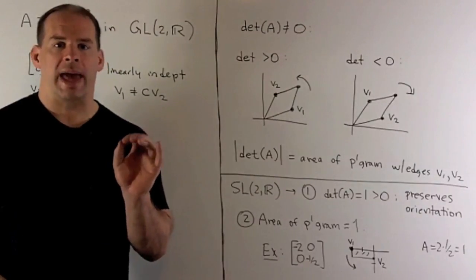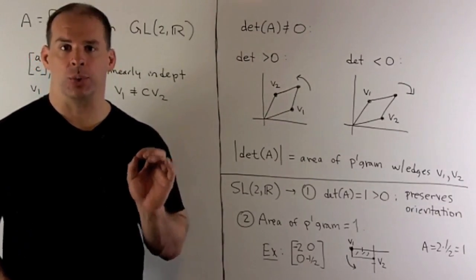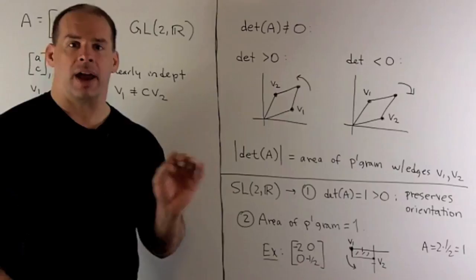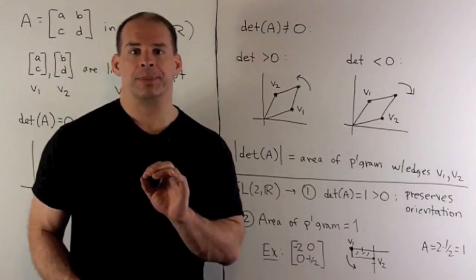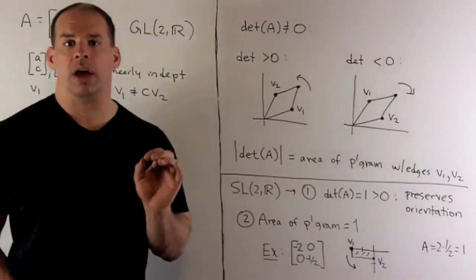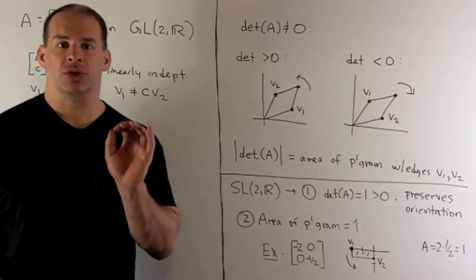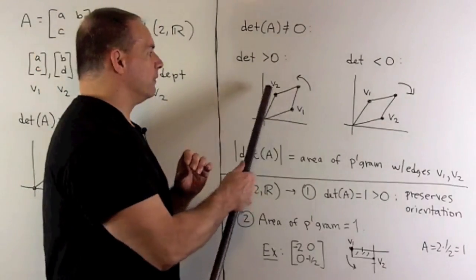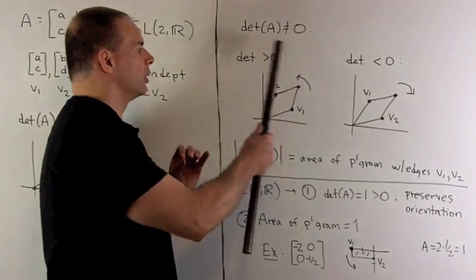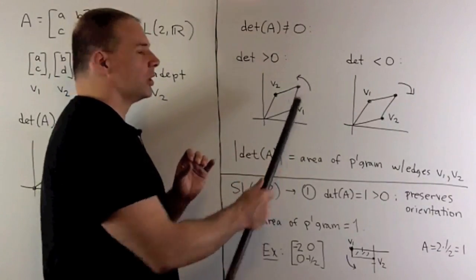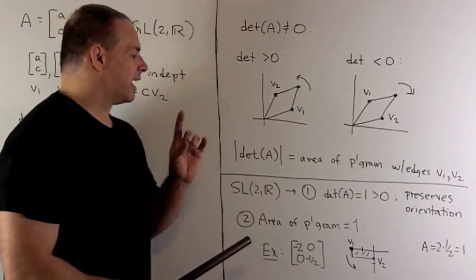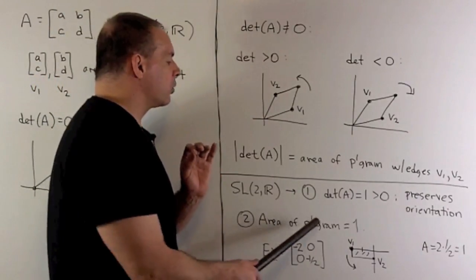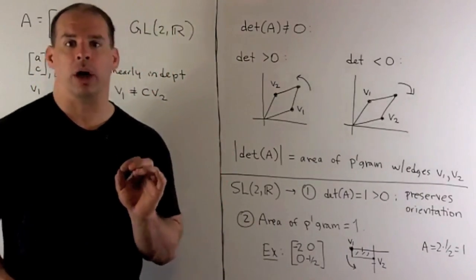Now, what happens if we're in SL(2,R)? Now, everything from before applies. Since the determinant is equal to one, that means the determinant is greater than zero. So, that's always going to mean that V1 and V2 always go in this direction, so it preserves orientation. And then, the area of the parallelogram is always going to be equal to one.